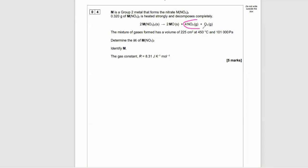The mixture of gases formed has a volume of 225 centimeter cubed at 450 degrees and 101,000 pascals. Determine the MR of the metal nitrate and identify M. The gas constant is 8.31.